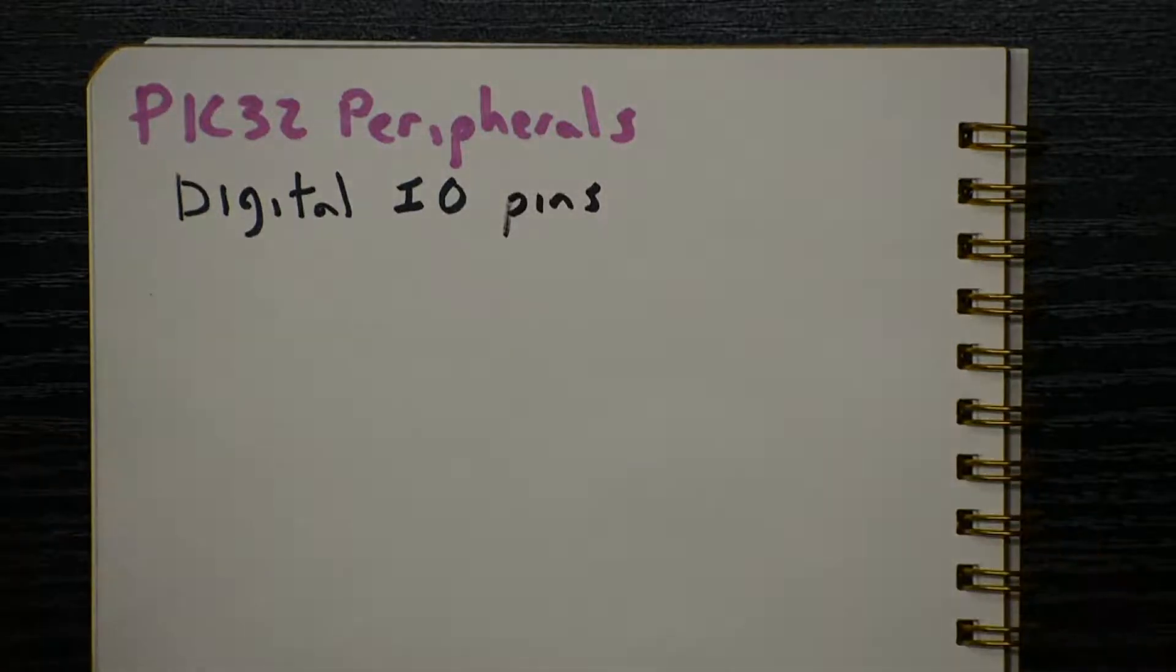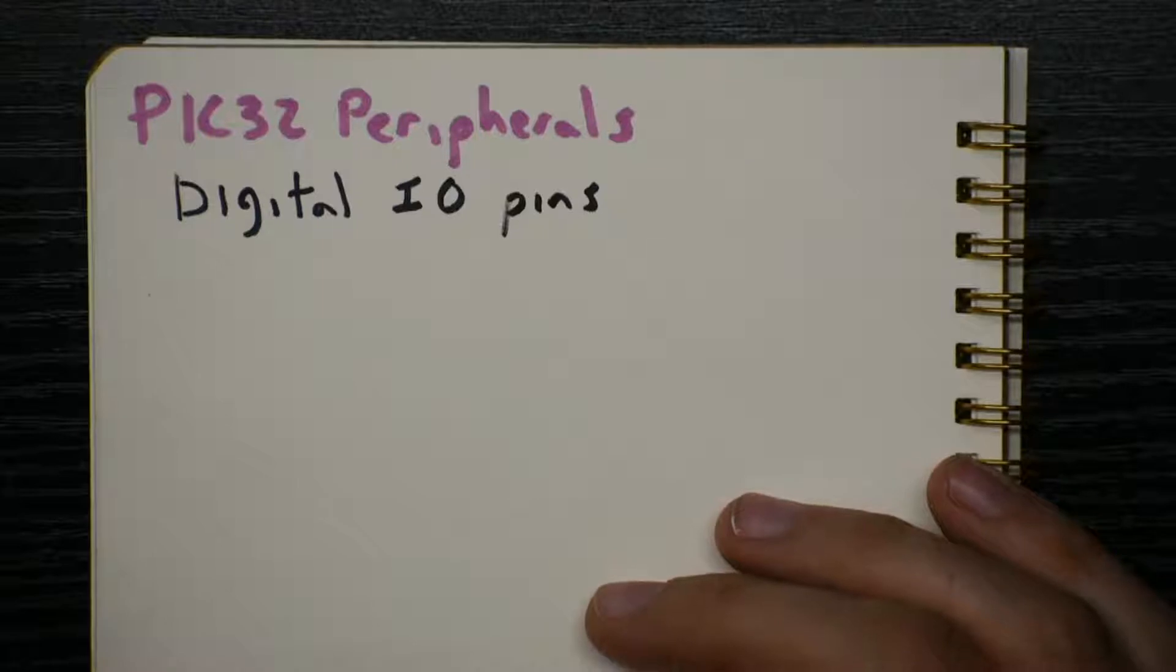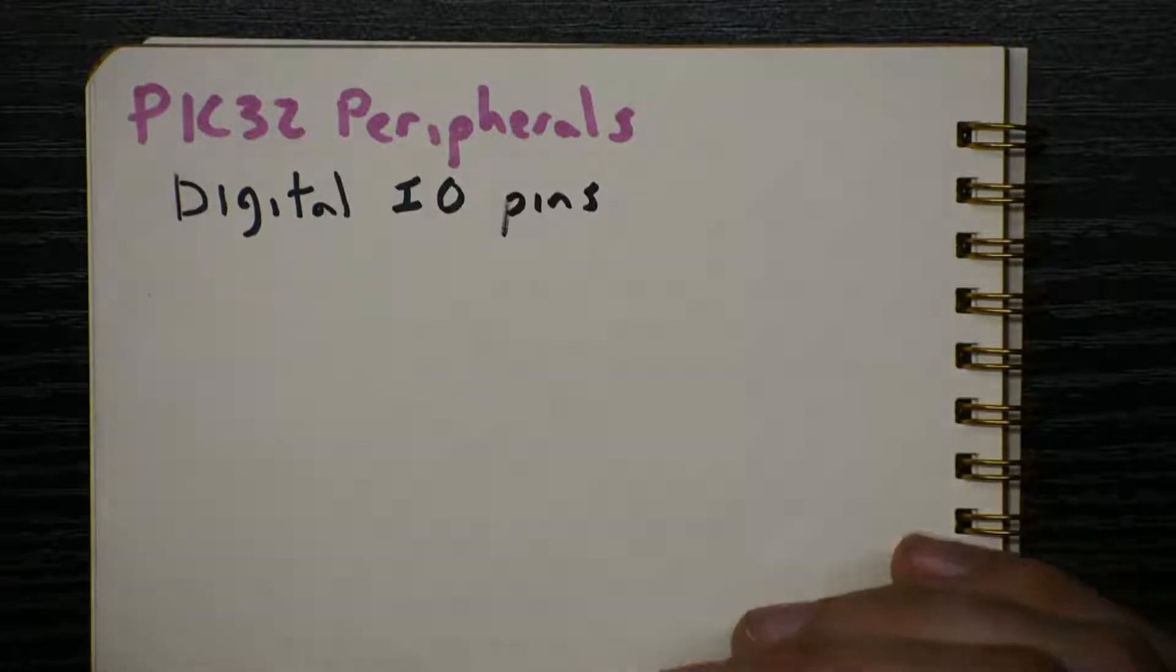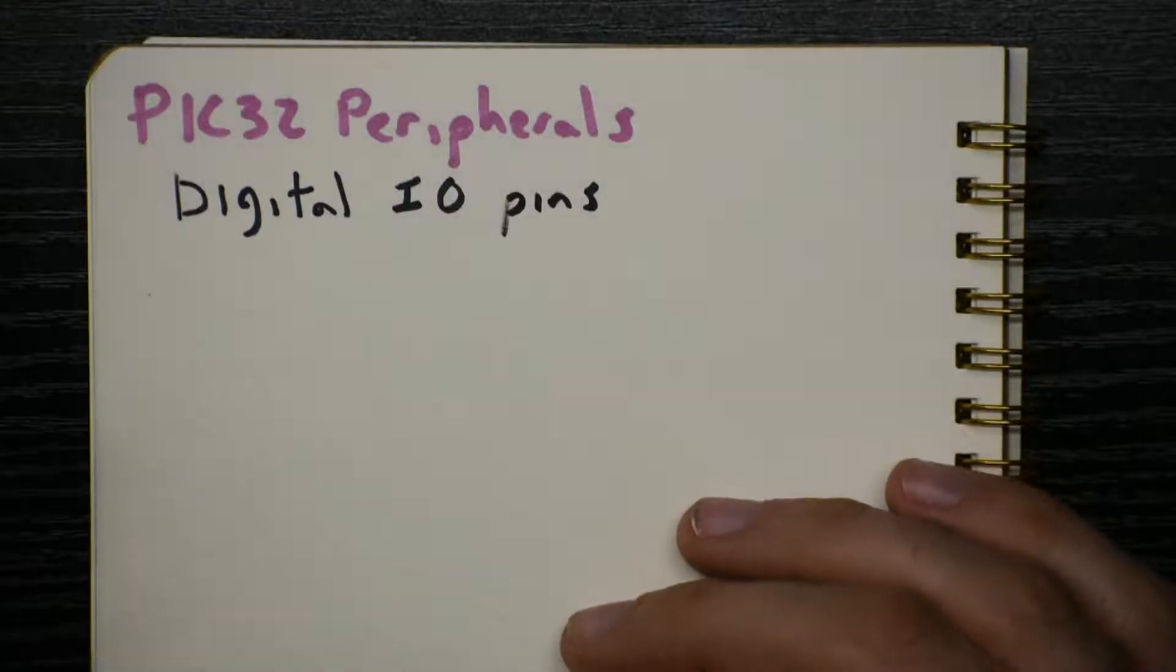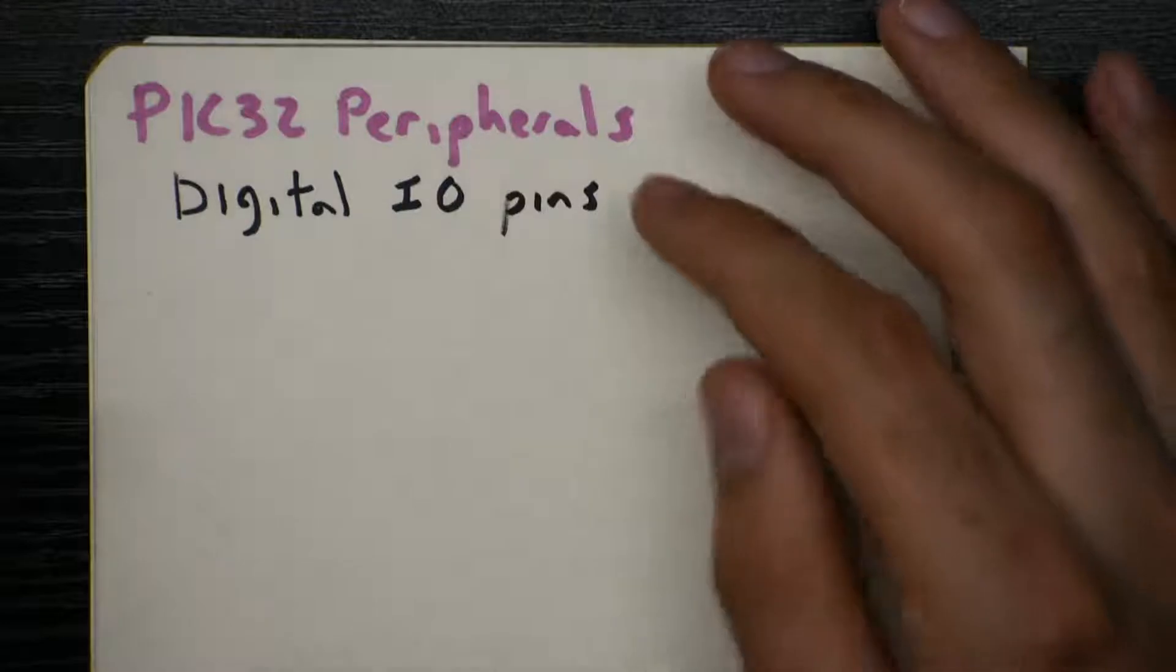So far, we've discussed at length the inner workings of the PIC, how the memory is used to store our program, how data is passed around between flash and the cache and RAM. Now we'll start to consider all of the extras that Microchip has given us on the PIC32, the peripherals.